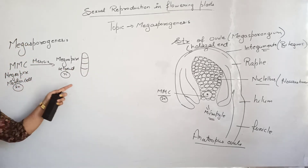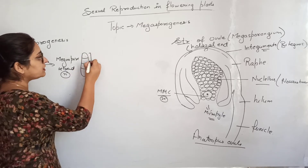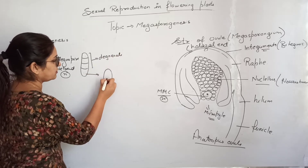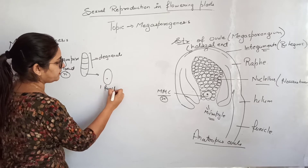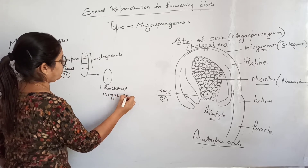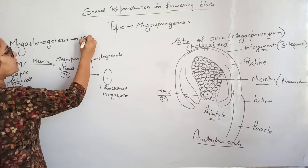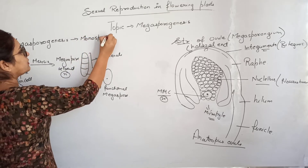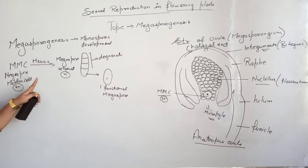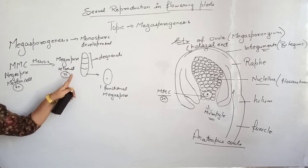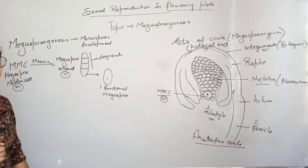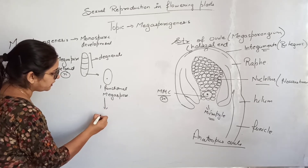Out of the four cells in the megaspore tetrad, three will degenerate and only one functional megaspore remains. That is why megasporogenesis is also known as monosporic development — because after meiosis of the megaspore mother cell, three of the four megaspores degenerate and only one functional megaspore is left.